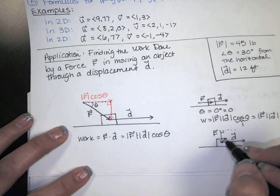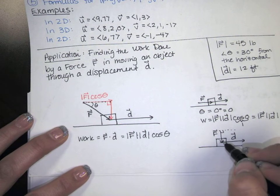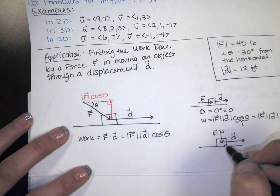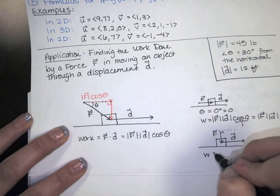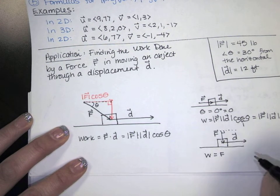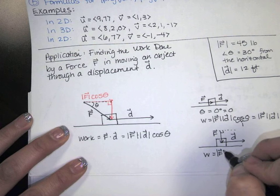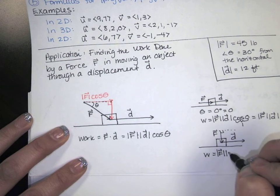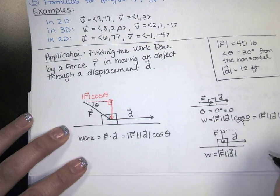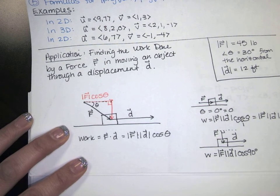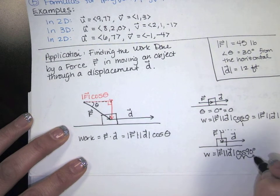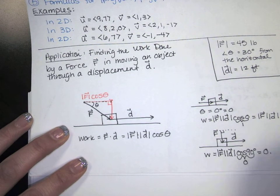If I want the work done when I apply this force to move this box through this displacement, even though it feels like I'm doing a lot of work, there's no work done. The box isn't going to move. We're going to have the magnitude of the force times the magnitude of the displacement times the cosine of the angle between them, but this time the angle is 90 degrees. That's zero. There's no work done in that case.